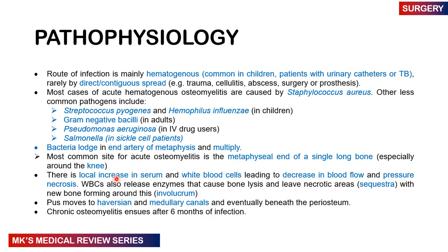What's the pathophysiology? The route of infection could be hematogenous spread — very common in children or patients with urinary catheters or TB. Rarely, it's from direct or contiguous spread from trauma, cellulitis, an abscess, surgery, or a prosthesis. Most organisms causing acute hematogenous osteomyelitis are Staphylococcus aureus, but less common pathogens include Streptococcus pyogenes, Haemophilus influenzae in children, gram-negative bacilli in adults, Pseudomonas aeruginosa in IV drug users, and Salmonella in sickle cell patients.